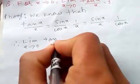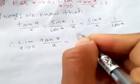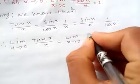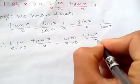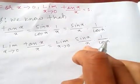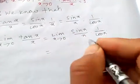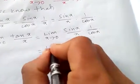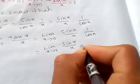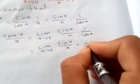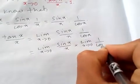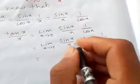Now taking the limit, we get: limit as x tends to 0 of tan(x) by x is equal to limit as x tends to 0 of sin(x) by x into 1 by cos(x). Using the properties of limits, we split this into: limit as x tends to 0 of sin(x) by x, multiplied by limit as x tends to 0 of 1 over cos(x).